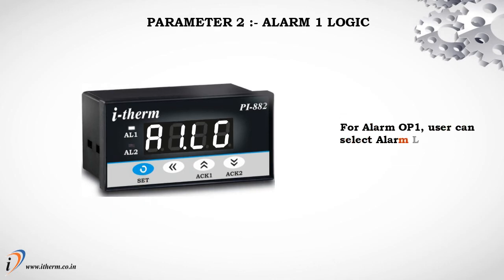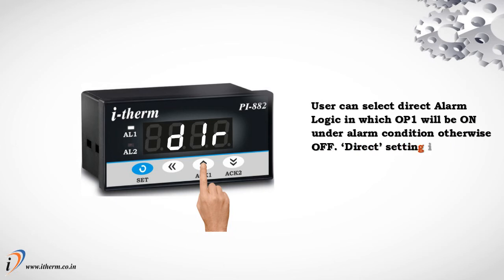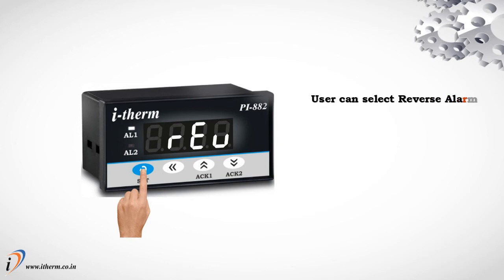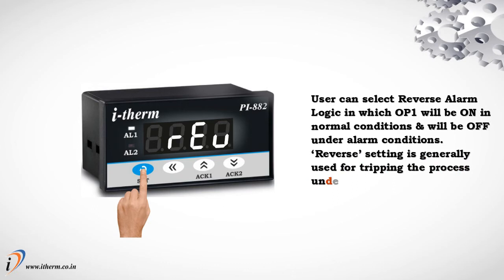Parameter 2: Alarm 1 Logic. For alarm output 1, the user can select alarm logic as Direct or Reverse. In Direct logic, output 1 will be ON under alarm condition, otherwise OFF — generally used for audio or visual alarm output. In Reverse logic, output 1 will be ON in normal conditions and OFF under alarm conditions — generally used for tripping the process under alarm condition.